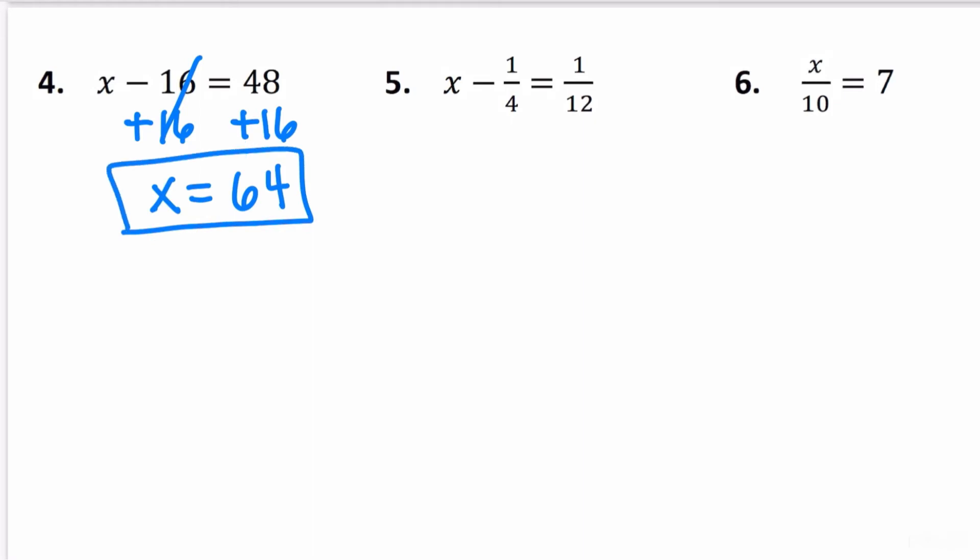Once again, you can go ahead and check. If you substitute it, 64 minus 16 is in fact—this becomes 14, this is a 5—it's in fact 48.